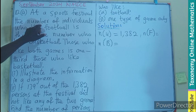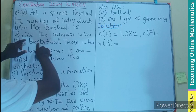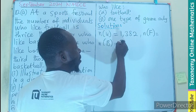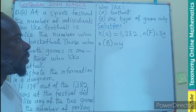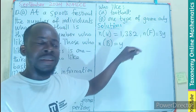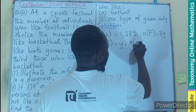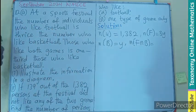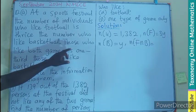At the festival, the number of individuals who like football is twice the number who like basketball. So it means that if I know the basketball number, then three times that gives me the football. That's the expression we're looking for — three times the number for basketball, so football = 3y.